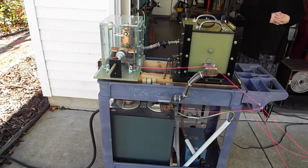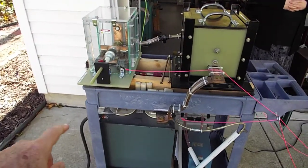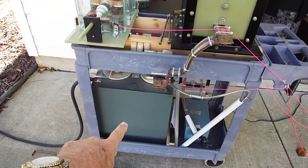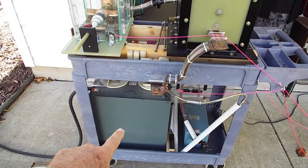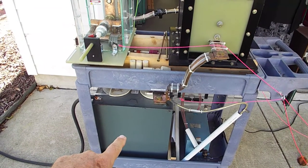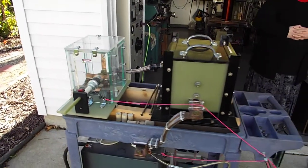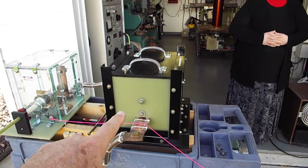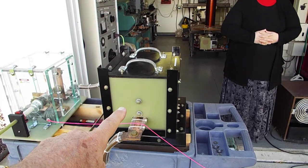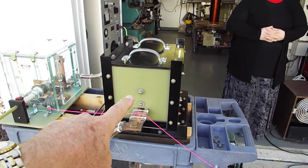It basically consists of three parts. There's a big capacitor down here, 100 microfarads up to 2,000 volts, a spark gap switch here, and this blast box. This is where the actual coin shrinking takes place.